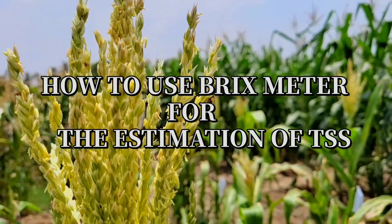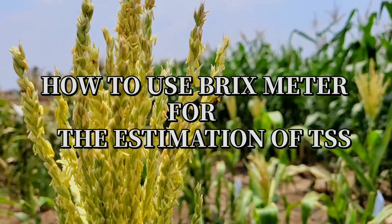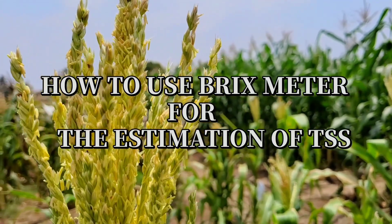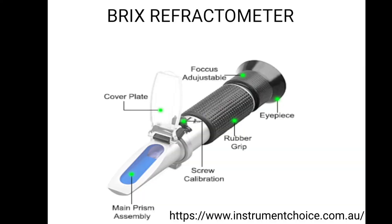In this video we are going to see how to use a Brix refractometer for the estimation of total soluble solids. A Brix refractometer is a device that measures refraction angles and converts the measurement into weight percentage of sucrose content, displayed as percentage in Brix.